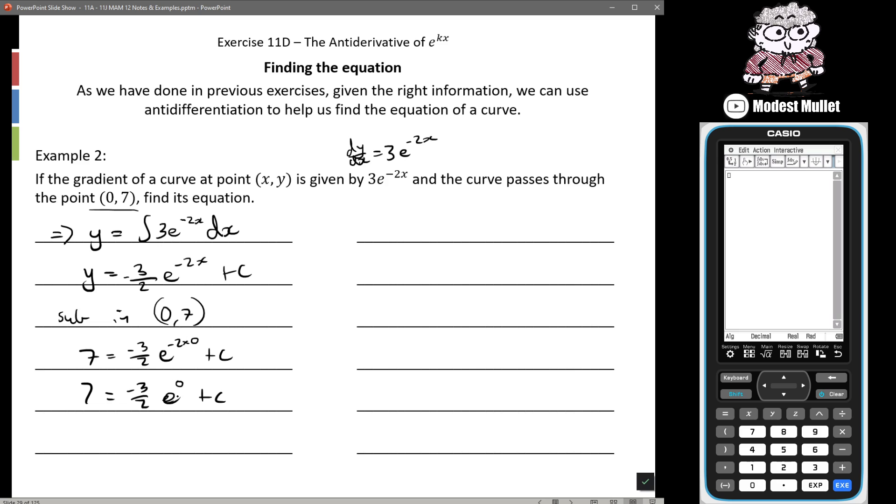And if we remember the 0 power law, anything to the power of 0 becomes 1. So we get 7 is equal to negative 3 on 2 plus c. Let's come over here. So just to get c by itself we need to add 3 on 2 to both sides. So c is going to be equal to 7 plus 3 on 2.